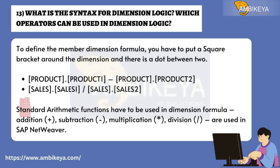Question 13: What is the syntax for dimension logic, and which operators can be used? To define the member dimension formula, you put square brackets around the dimension with a dot between two products: [Product].[Product1] / [Product].[Product2], [Sales].[Sales1] / [Sales].[Sales2]. Standard arithmetic functions used in dimension formulas are: addition (+), subtraction (-), multiplication (*), and division (/).